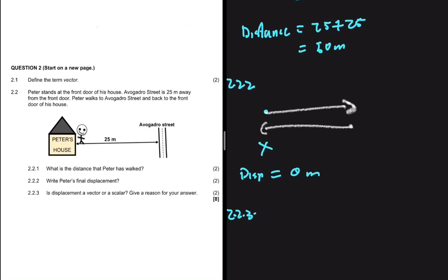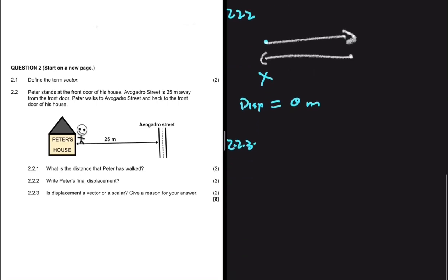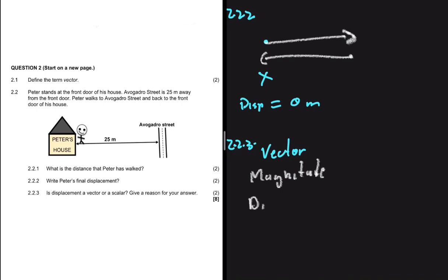Question 2.2.3 asks: is displacement a vector or a scalar? Give a reason for your answer. Displacement is a vector, because it has both a magnitude and a direction. If a physical quantity has magnitude and direction, then it is a vector. If it only has magnitude, then it is a scalar.